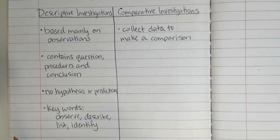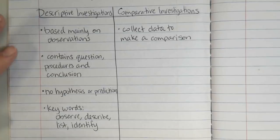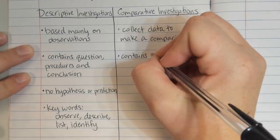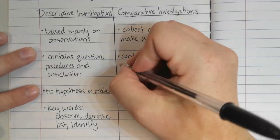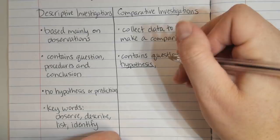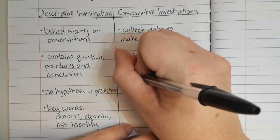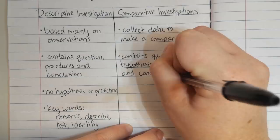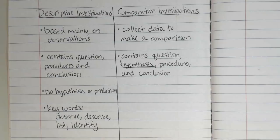That comparison could be two different conditions, two different times of year, two different locations, or two different temperatures, depending on what you're investigating. Just like the descriptive investigation, it's going to have a question — we're always answering a scientific question — there's going to be a procedure and a conclusion. But now we also have a hypothesis or a prediction. You can make a prediction based on what you are about to compare. So we're going to say it contains: question, hypothesis — and I'm going to underline that one since it's different from descriptive — procedure, and conclusion. Just like every investigation, it also has data collection and then graphs and analysis so the findings can be shared.